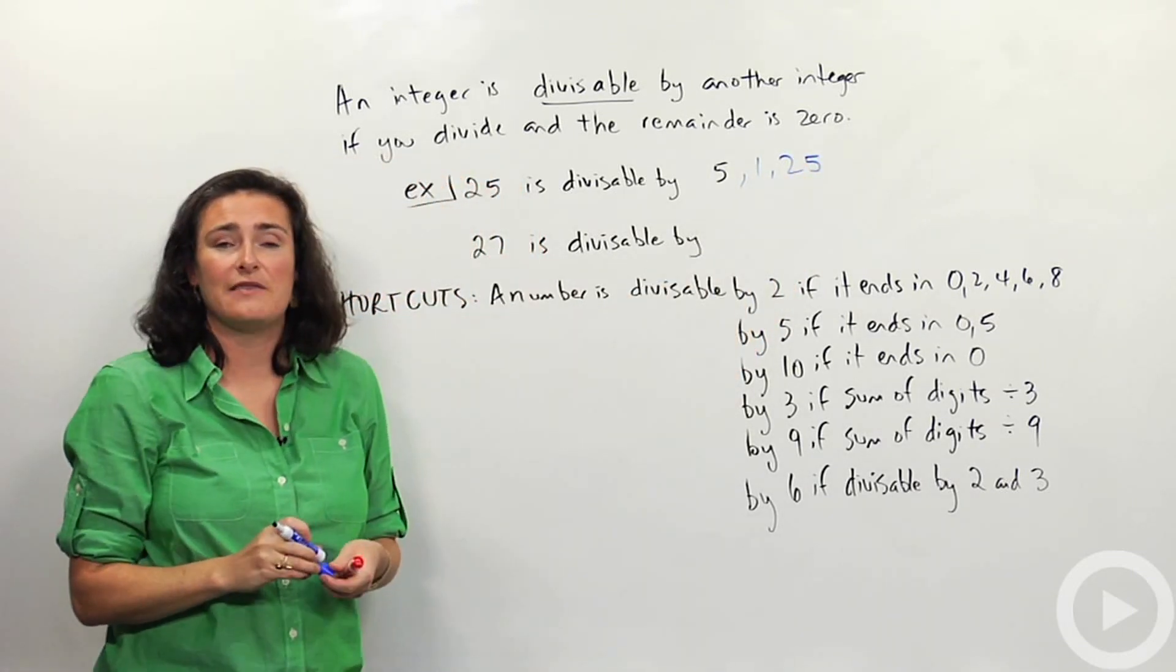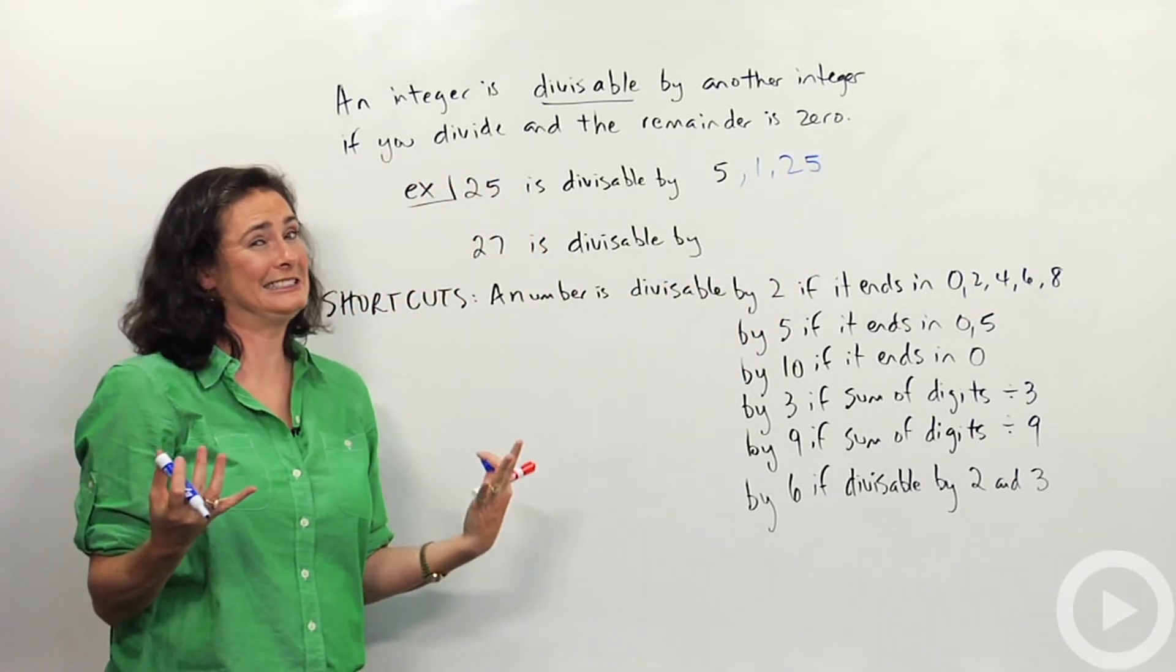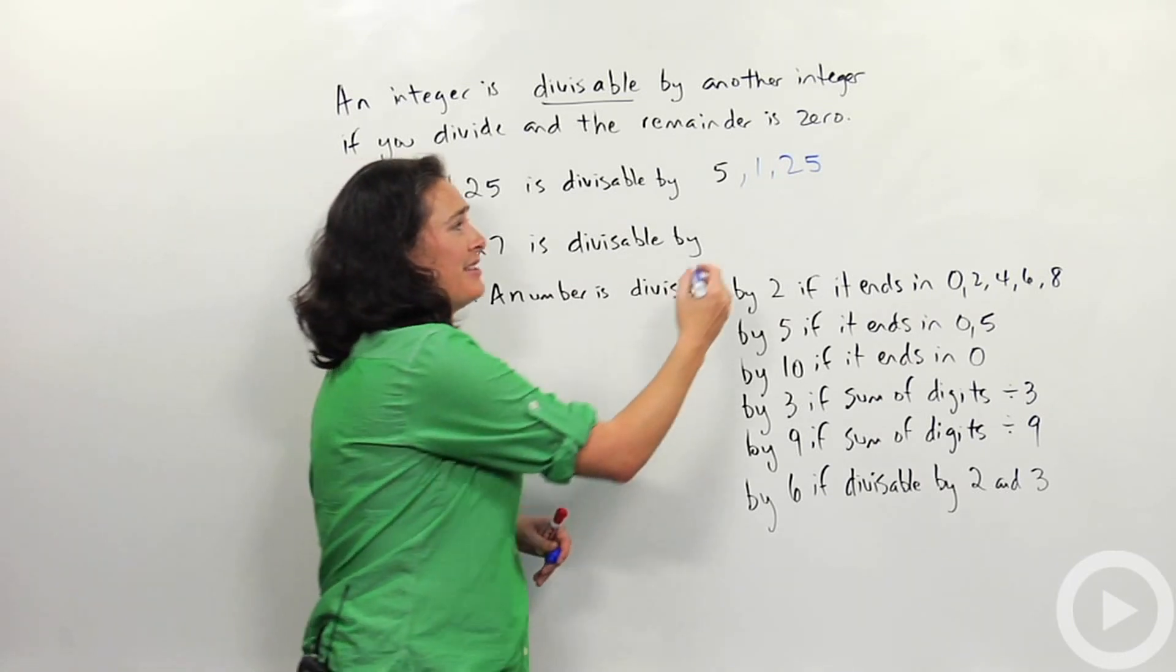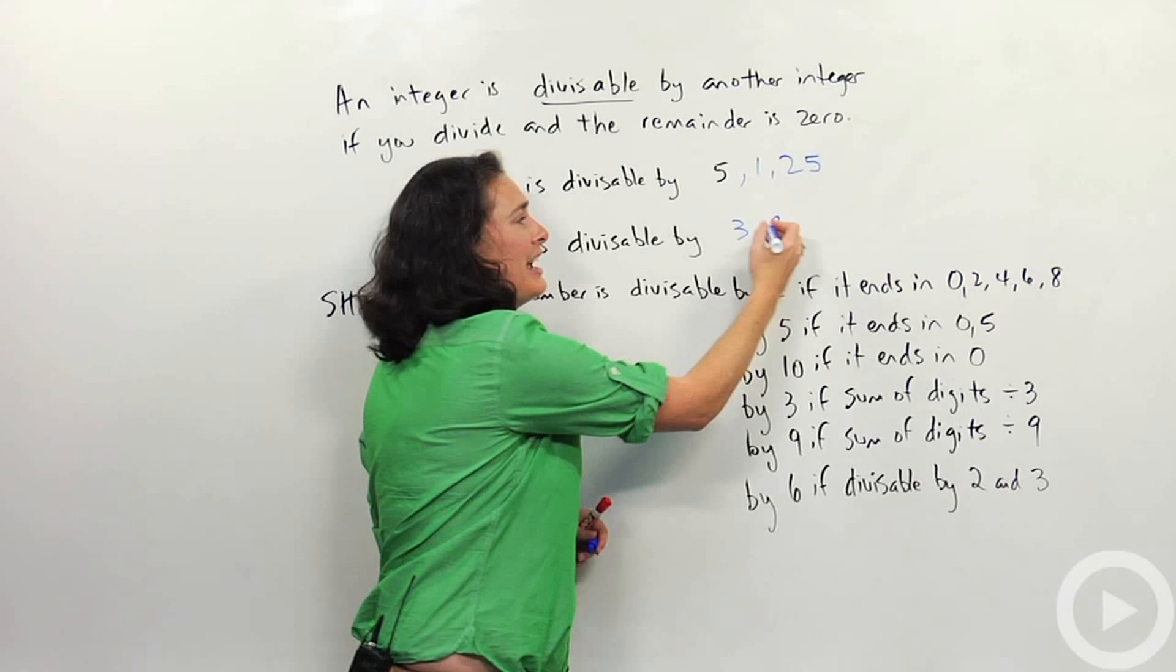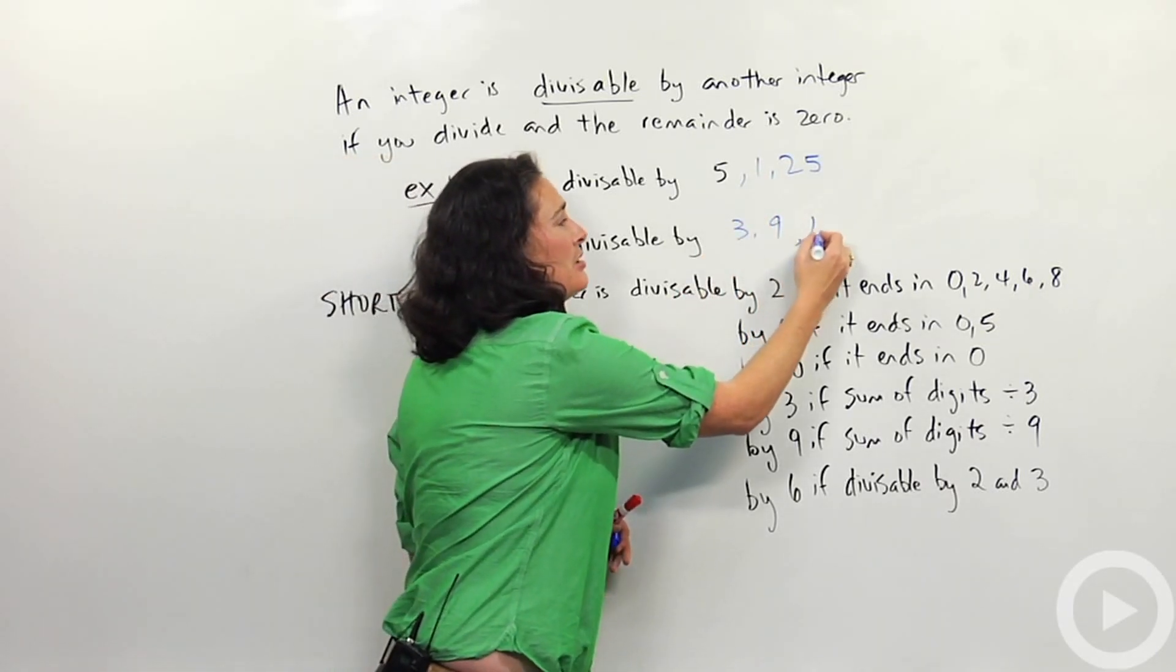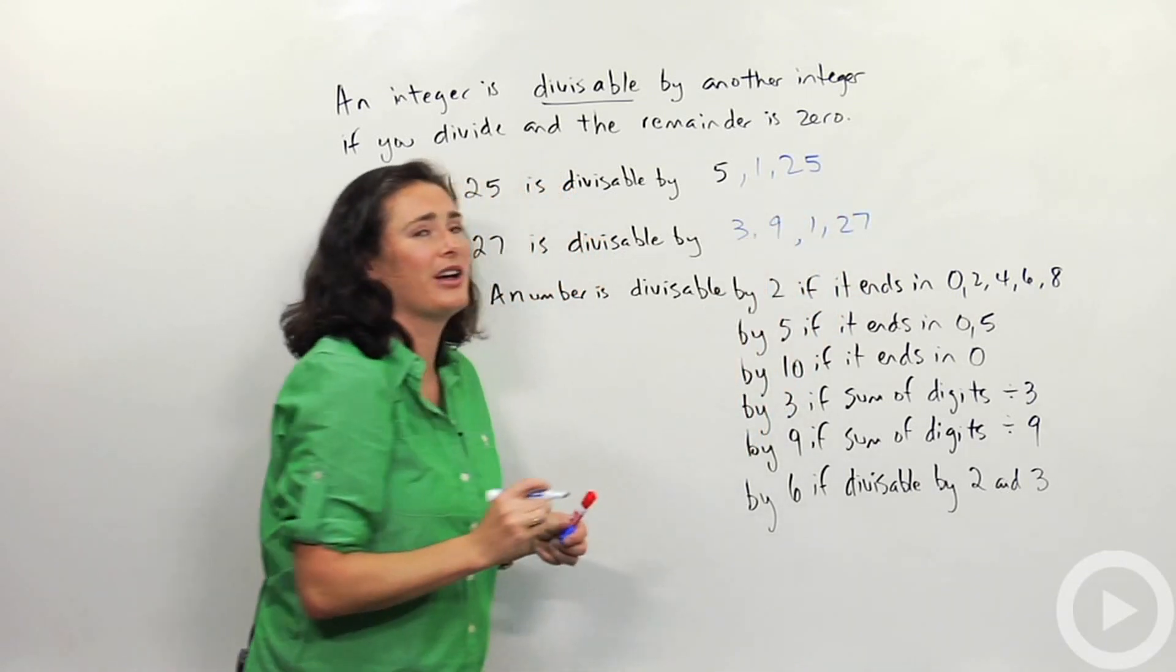Or if I want to look at the number 27, 27 is divisible by - can you think of anything? Think about what multiplies into 27. Many people think of 3 and 9, which is great. Another thing you might have forgotten is I could use 1 and 27 as well.